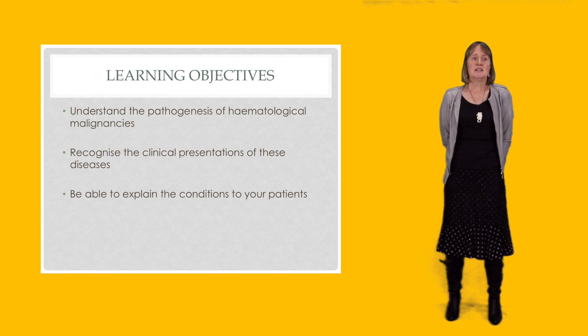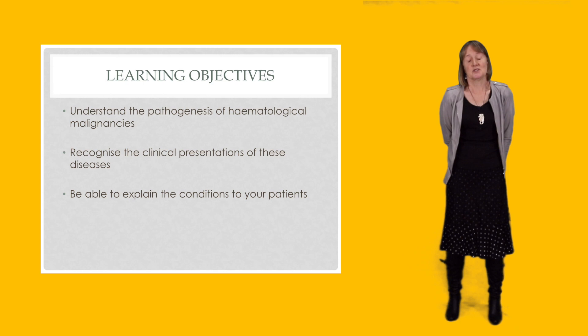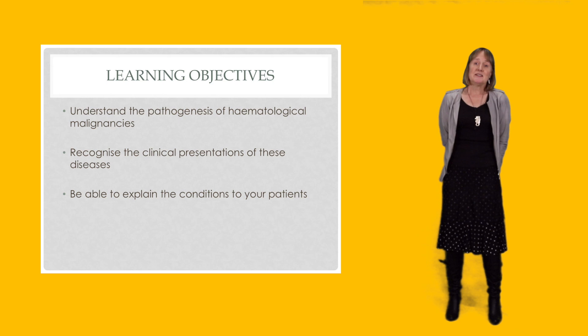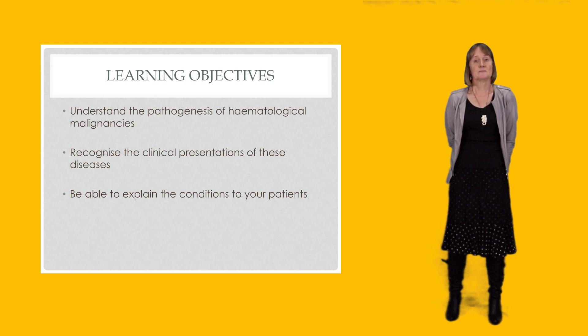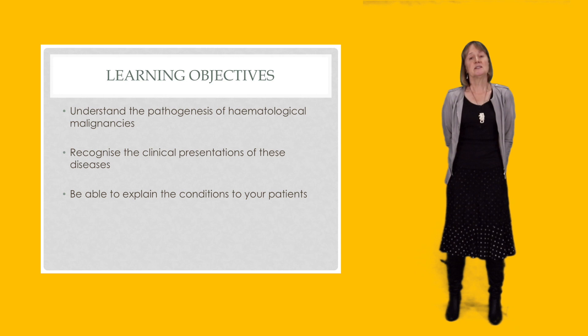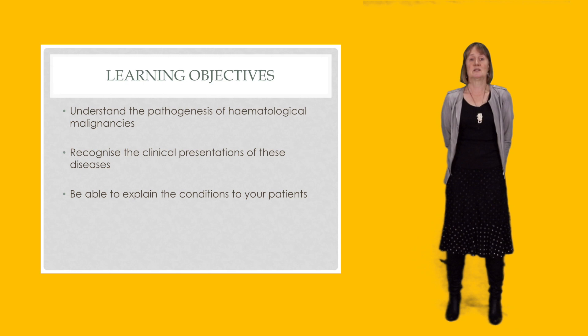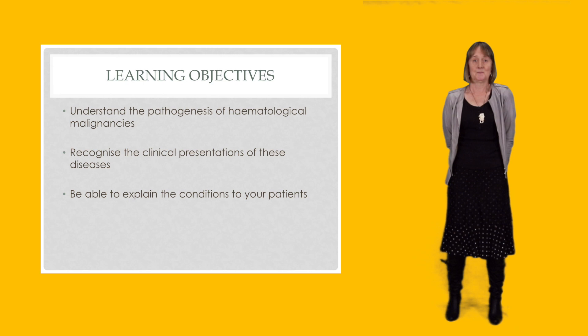And finally, this is a list of your learning objectives to bear in mind as we go through the course. So we want you to understand how the hematological malignancies arise, at least as much as we do, which sometimes isn't very much. We would like you to be able to recognize the clinical presentations when you see them on the wards or in your practice. And also importantly, we would like you to be able to understand enough about these conditions to explain them to your patients when you become doctors. Even if you're not going to be a hematologist, you are going to see people with these conditions, and it will be important that you know how to talk to your patients about them.